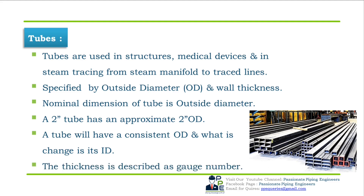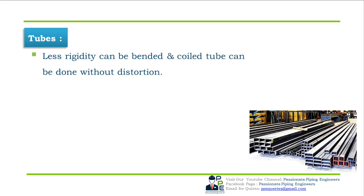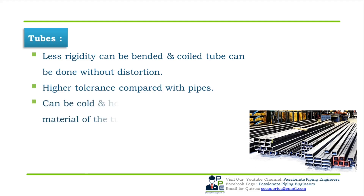A small gauge number indicates a large OD. Tubes are less rigid, and bending or coiling a tube can be done without any distortion or special equipment. Higher manufacturing tolerance means the stated OD and the manufactured OD are generally very close to each other. Tubes can be hot or cold rolled depending upon the material.